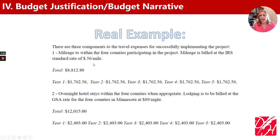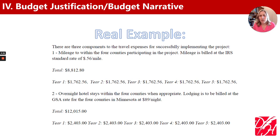Let's talk about some other expenses and how the budget justification can help us. In this travel example, this is very basic information. If I said you had a reimbursement rate of 56 cents per mile and a budget of $1,762.56, without getting your calculator out, would you know how many miles were funded? Probably not. As a grant reviewer, you'd be getting out your calculator to figure out how many miles would be driven.